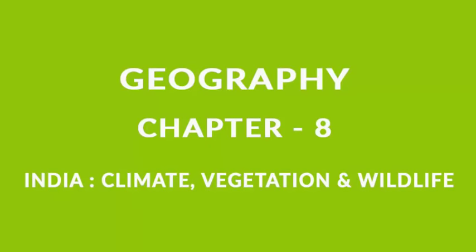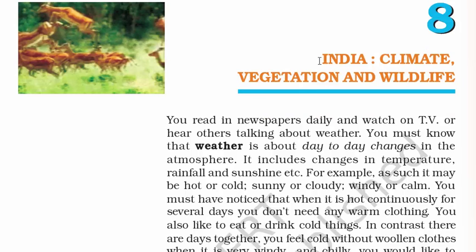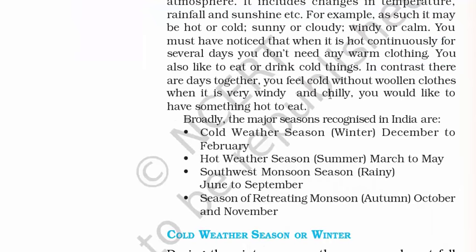Hello everyone, I'm back with another chapter of Geography Class 6 NCERT, Chapter 8: India – Climate, Vegetation and Wildlife. From the heading itself we know that in this chapter we are going to read about the climate, the vegetation and the wildlife of our country. In the first page, we have four major seasons in India: winter, summer, rainy and autumn.